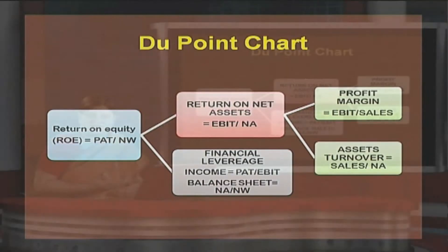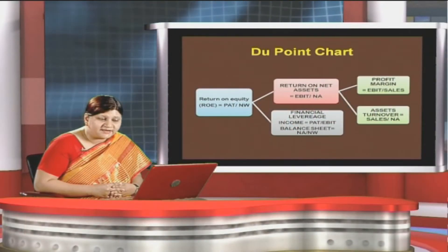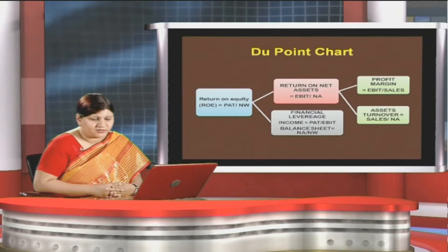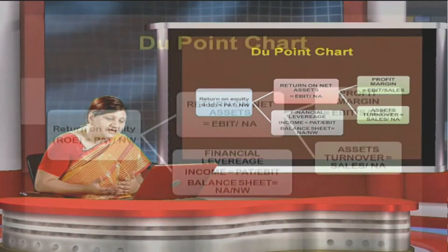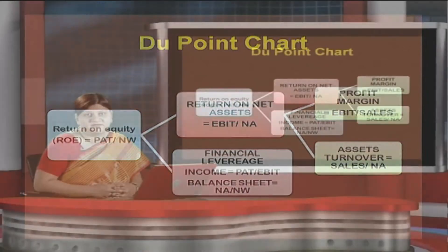When we interpolate the formulas, we extract a formula for return on net assets: EBIT / NA. Now we will have a financial leverage formula, which we call the equity multiplier. It can be on the basis of income — that is PAT (profit after tax) divided by EBIT — or on the basis of the balance sheet, where it is NA / NW (net assets divided by net worth).